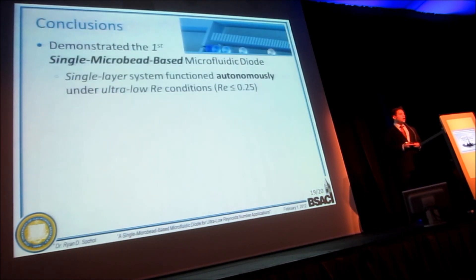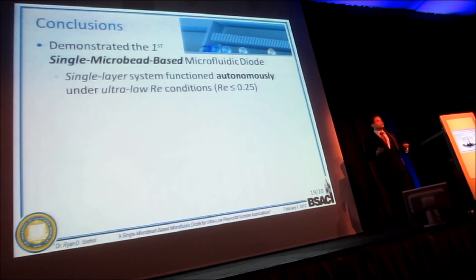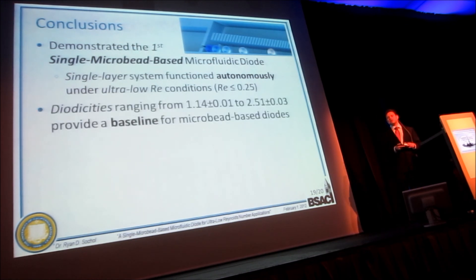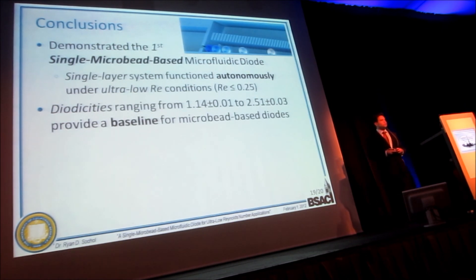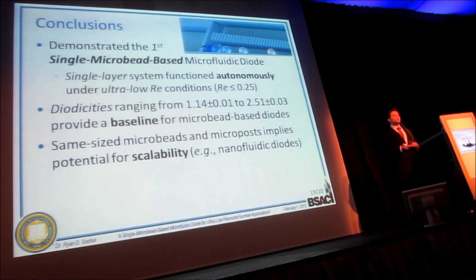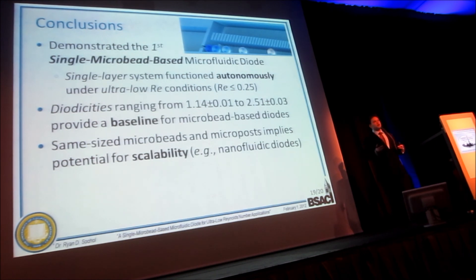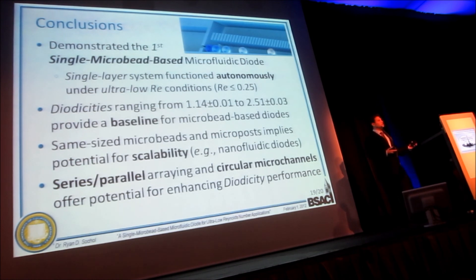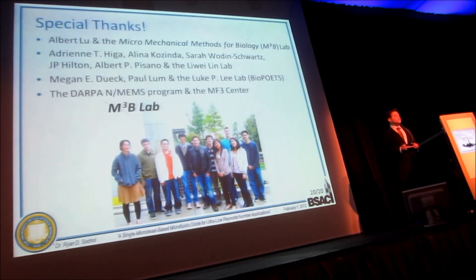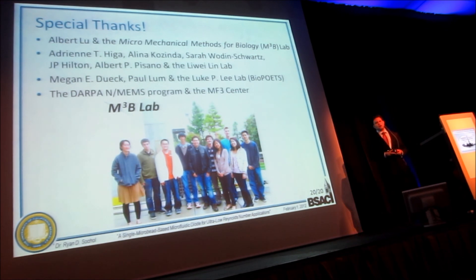In conclusion, we've demonstrated the very first microfluidic diode that uses a single microbead to rectify fluid flow autonomously under ultra-low Reynolds number conditions. We achieved diodicities ranging from approximately 1.14 to 2.51, providing an important baseline for future bead-based microfluidic diodes. Since the microbeads and microposts are essentially the same scale as cells, there is potential to scale this down to create nanofluidic bead-based diodes. In future work, we will look at arraying diodes in series and parallel, as well as using circular microchannels to improve overall diodicity performance. I want to thank everyone who played a role in this project, especially my students in the M3B lab back at Berkeley.